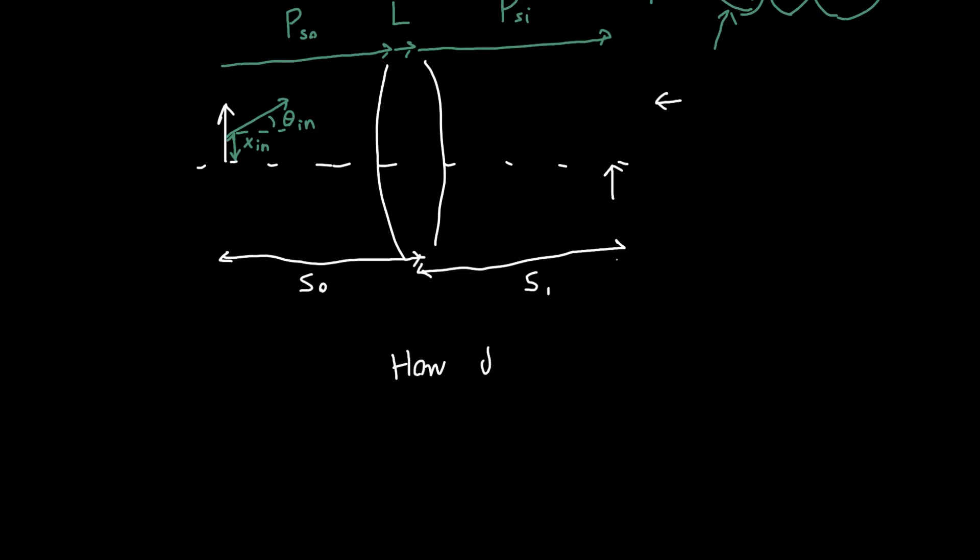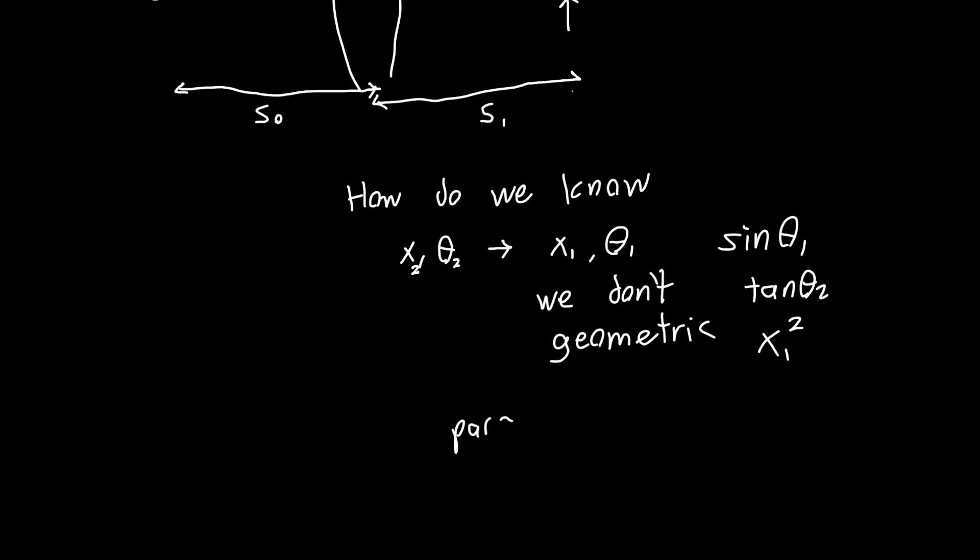So I'm just going to make one last comment. And that's how do we know that X and theta are actually linear functions? So X two and theta two are actually linear functions of X one and theta one. Well, in general, we don't. This is, these actual relationships look like geometric relationships. So we've probably got a sine theta one, we might got a tangent theta two, we might have an X one squared. But if we make the paraxial approximation, so also known as the small angle approximation, so theta one is very, very small, so theta one is much less than say pi over two, then these relationships do in fact reduce to linear relationships. And so we can use ray transfer matrices only when we have small angles to deal with.